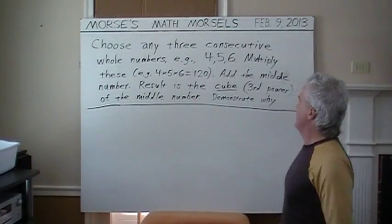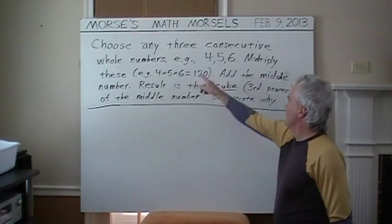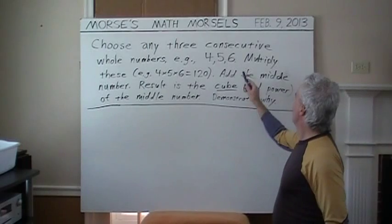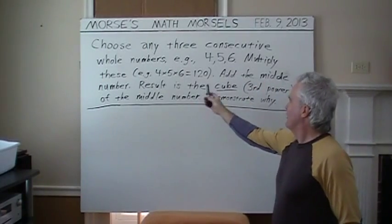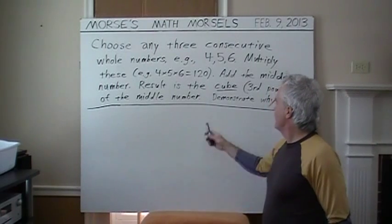This one states: choose any three consecutive whole numbers, for example, 4, 5, and 6. Multiply these. For example, 4 times 5 times 6 yields 120.